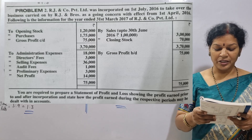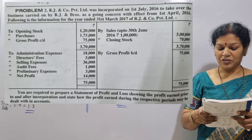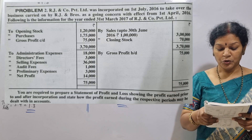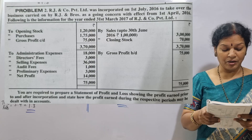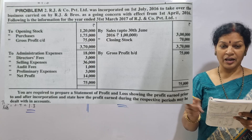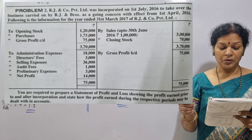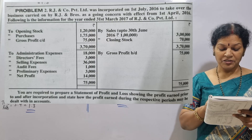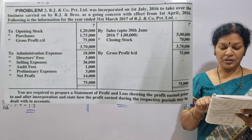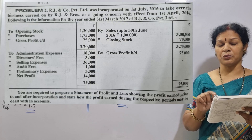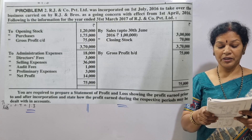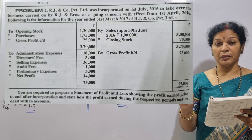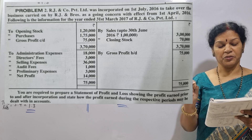R.J. & Company Private Limited was incorporated on 1st July 2016. The incorporated date is 1st July. It started to take over the business carried on by R.J. & Brothers. They are a private limited company, and they are concerned with it from 1st April 2016.